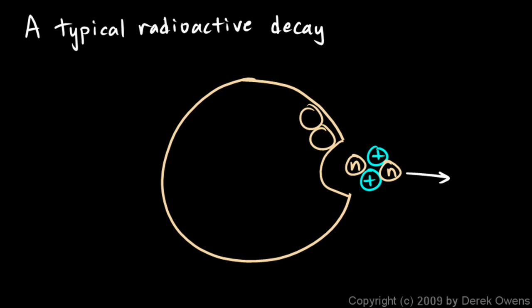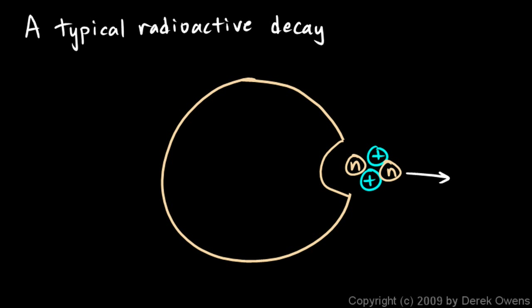All of these other particles are left behind, but what's left is a different element. And this process is called transmutation — it has changed from one element into another. In that little process we've seen alpha and beta radiation. The element here has become smaller, that's why we consider this to be decay. There's becoming less and less material there as it decays, and it's radioactive because we've seen two types of radiation emitted in this process.